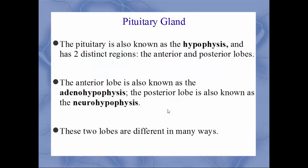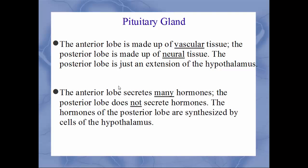The formal name for the pituitary is the hypophysis. It has two distinct regions: the anterior lobe, formally called the adenohypophysis, and the posterior lobe, known as the neurohypophysis. These lobes differ in composition: the anterior lobe is made up of vascular tissue, while the posterior lobe is made up of neural tissue — it is really just an extension of the hypothalamus itself.